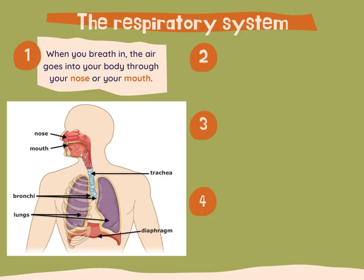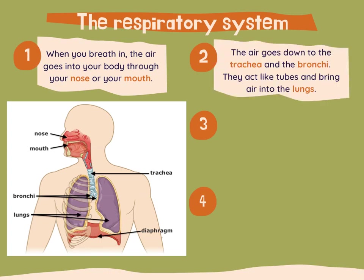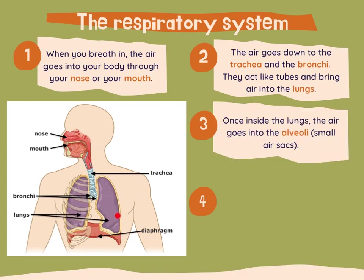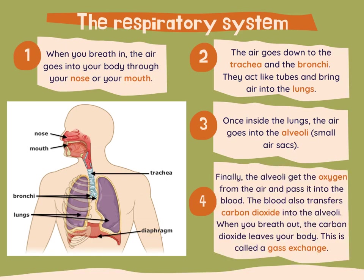Let's have a look at the respiratory system. When you breathe in, the air goes into your body through your nose or your mouth. Then the air goes down the trachea and the bronchi, which act like tubes and bring air into the lungs. Once inside the lungs, the air goes into the alveoli — they are small air sacs. The alveoli get the oxygen from the air and pass it into the blood. The blood also transfers carbon dioxide into the alveoli. When you breathe out, the carbon dioxide leaves your body. This is called a gas exchange.